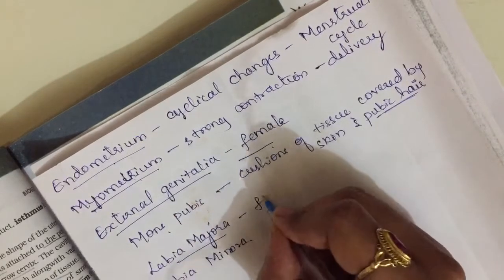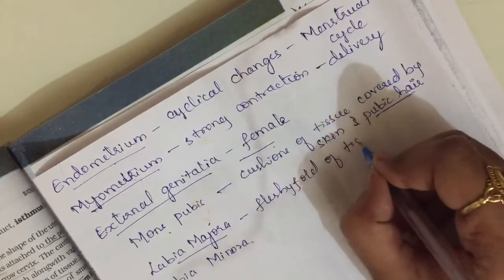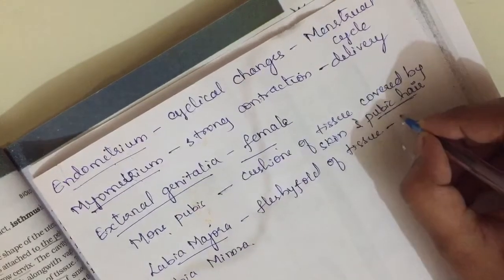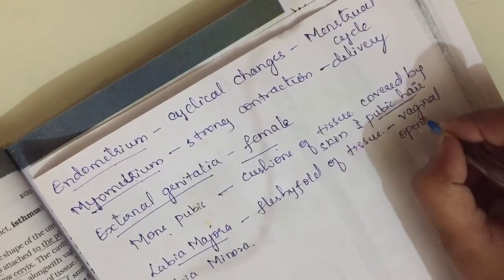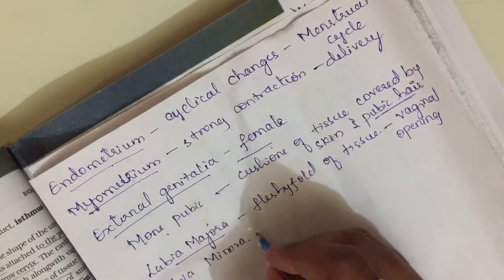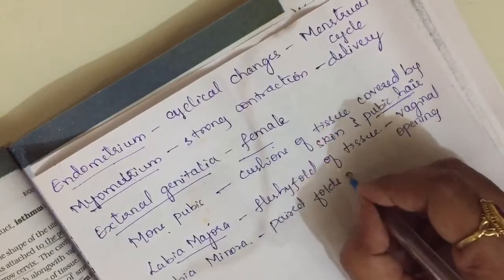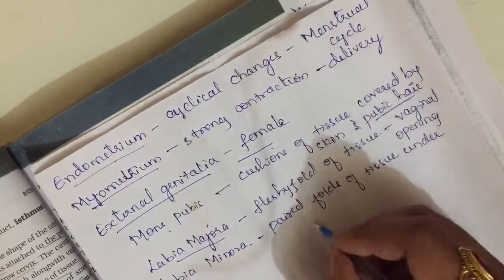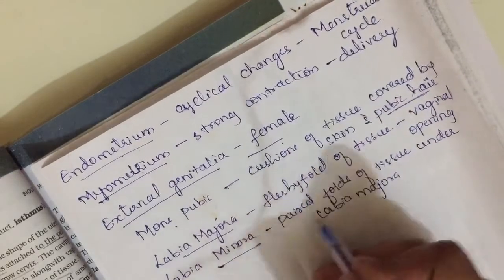The labia majora are fleshy folds of tissue that surround the vaginal opening. Inside the labia majora there is the presence of the labia minora, which are also paired folds of tissue.